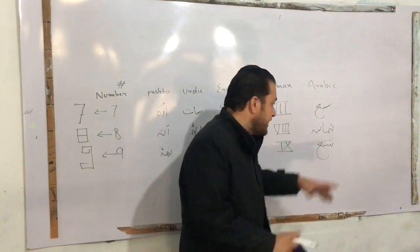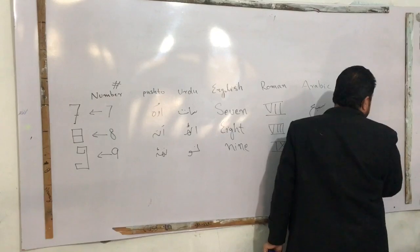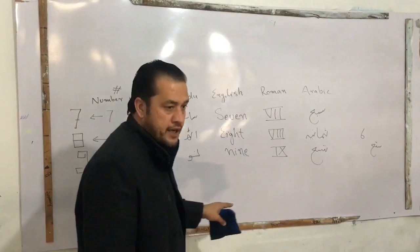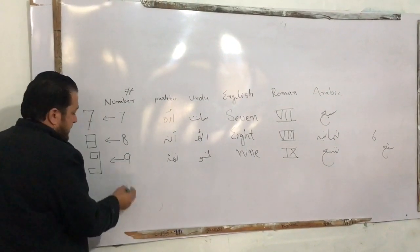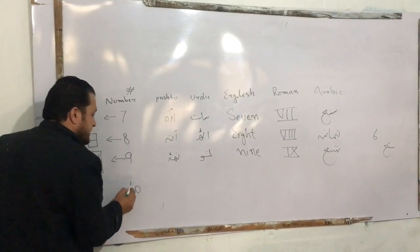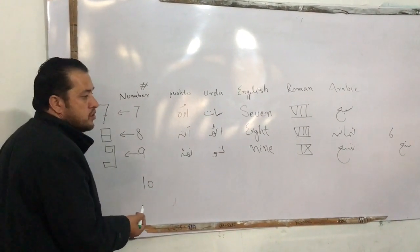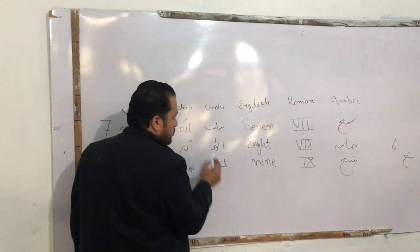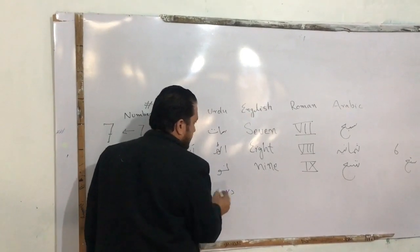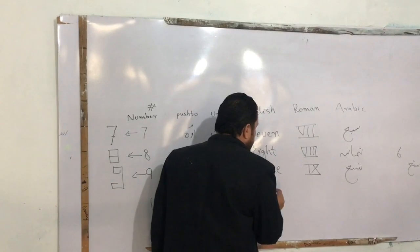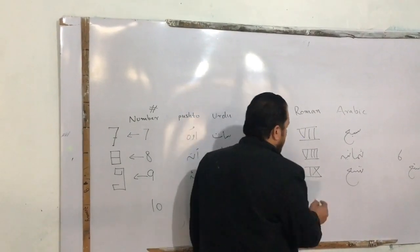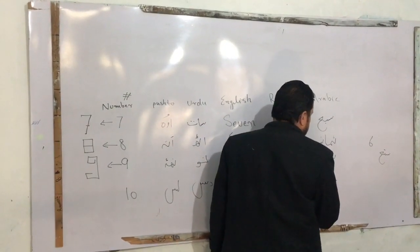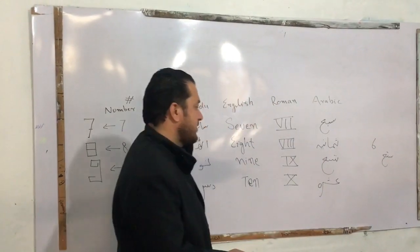Then you can use the same word for 10. This is one of the same words. How do we do it? 10 — and in Roman numerals, what is it? X. And what is it in Arabic? Asherah — asherah, asherah, asherah.